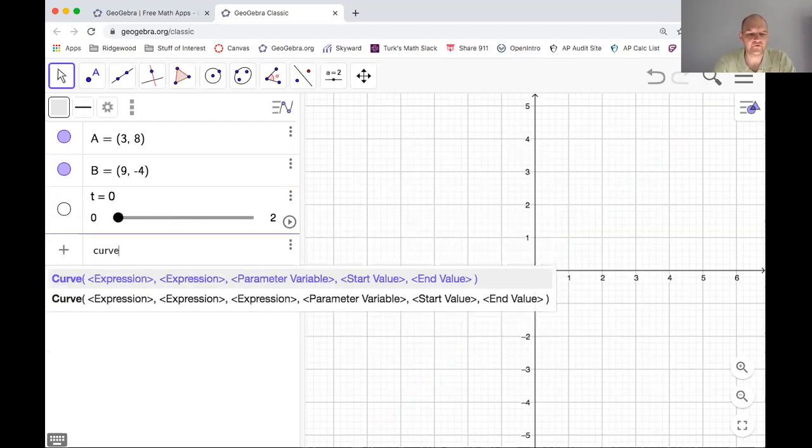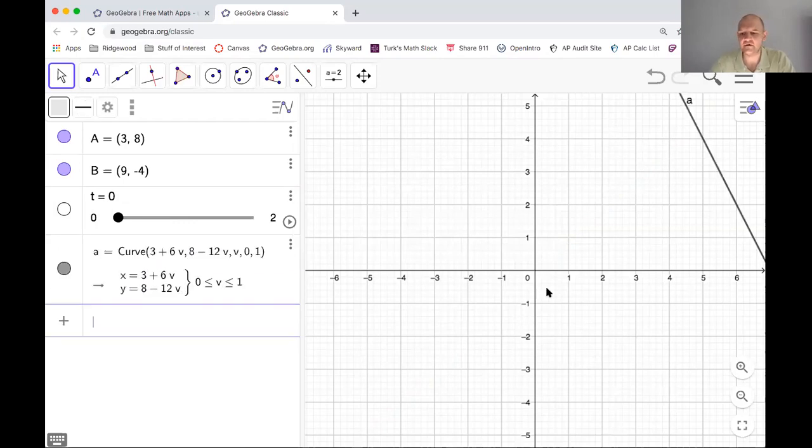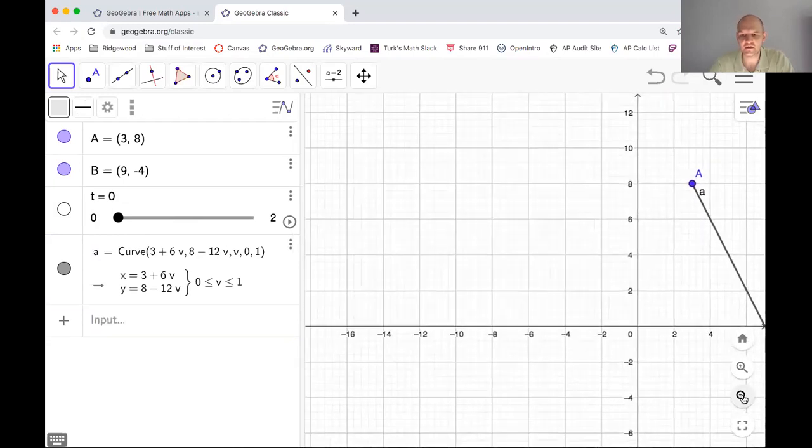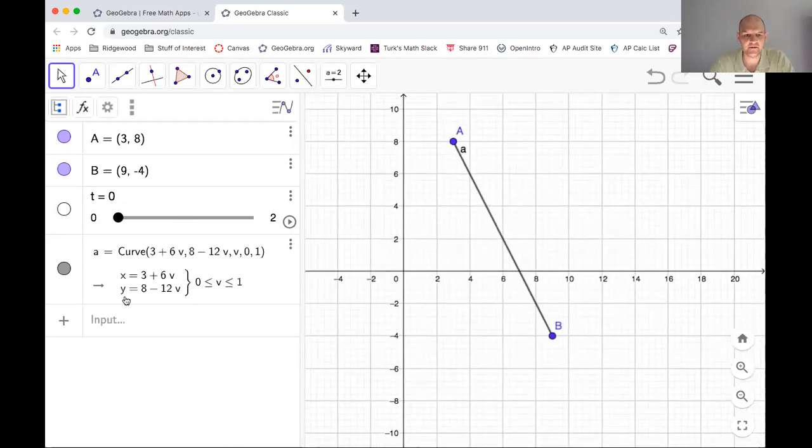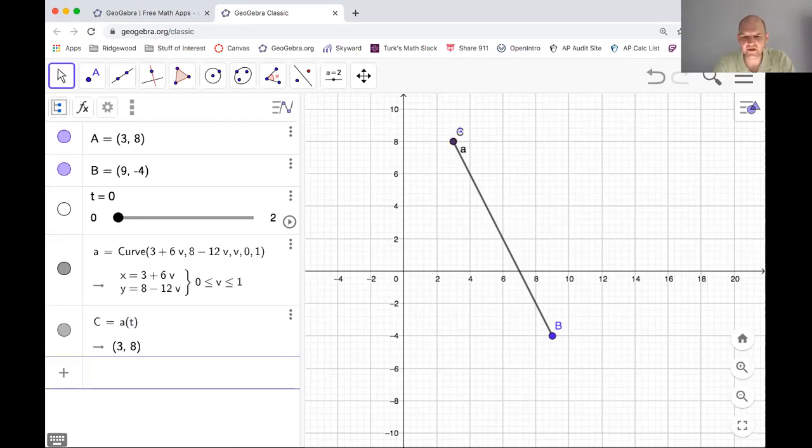Curve. 3 plus 6V. So I'm doing the one that's going to go from (3, 8) to (9, -4), and then 8 minus 12V. I already know this one's going to work because we did it. So let me zoom out a bunch. So if I put a point on there, if I just do A of T, let's just do A of T. We'll work out what's happening as we go. Hit play. It's going to go. It's going a little slowly. You could increase the speed. And you can see it goes way past.